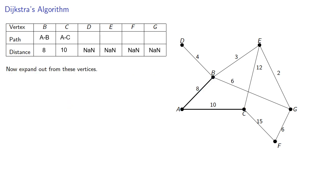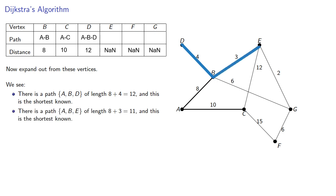Now we expand out from these vertices. From B, we can expand to D, and there is a path ABD of weight 8 plus 4 is 12, and this is the shortest known. So we'll record it. Then we can also go from B to E, and this gives us a path ABE of length 11, and this is the shortest known. And there's a path A to B to G of length 14, and this is the shortest known.